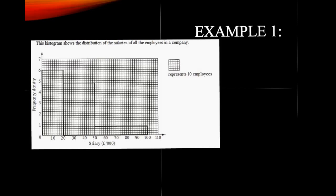Doing it very quickly, we can count the squares and work out that there are 120 employees in total across the whole histogram.